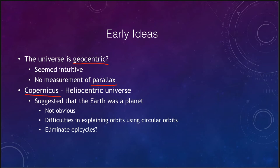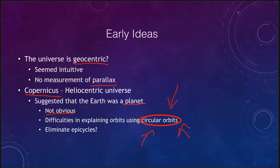Copernicus gave us the idea of a heliocentric universe and suggested that the earth was a planet just like the other planets. However, this was not obvious, and there were still difficulties because circular orbits were used. As long as you used circular orbits you could not easily explain the motions of the planets. Copernicus's followers were not able to eliminate epicycles — they needed them not to explain retrograde motion, but to explain the variations that occurred because the orbits were not truly circular.